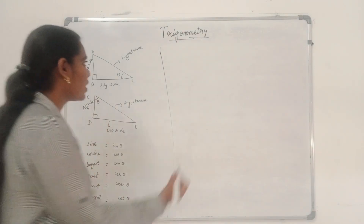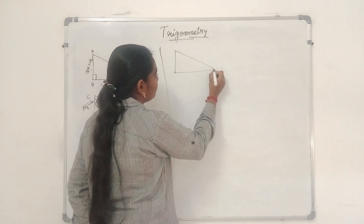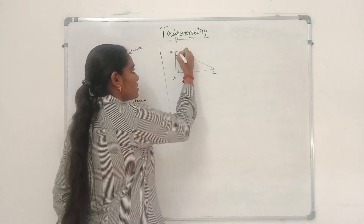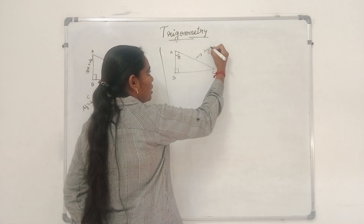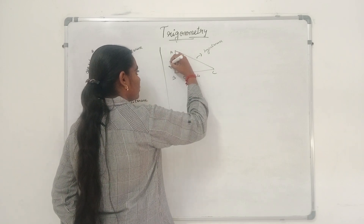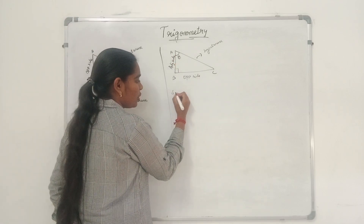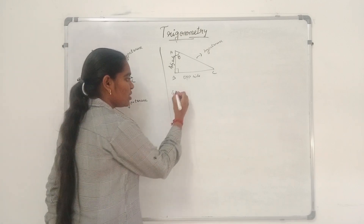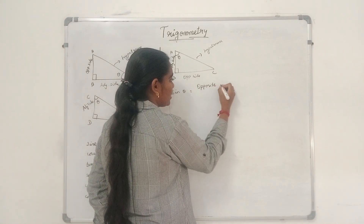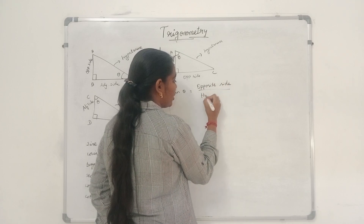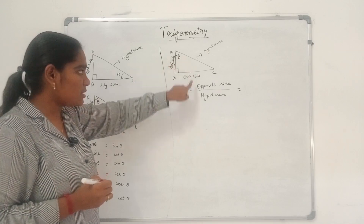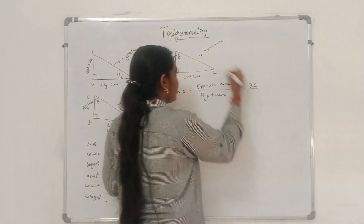Now consider right-angled triangle A, B, C, right-angled at B with theta at A. So hypotenuse is AC, opposite side is BC, and adjacent side is AB. We are going to write the basic six trigonometric ratios. Sin theta equals opposite side by hypotenuse, so sin theta equals BC by AC.